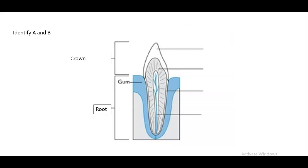Identify A and B. A is the crown and B is the root. So the crown is what you see on the tooth and the root of course includes the pulp cavity, the nerves, and the blood supply.